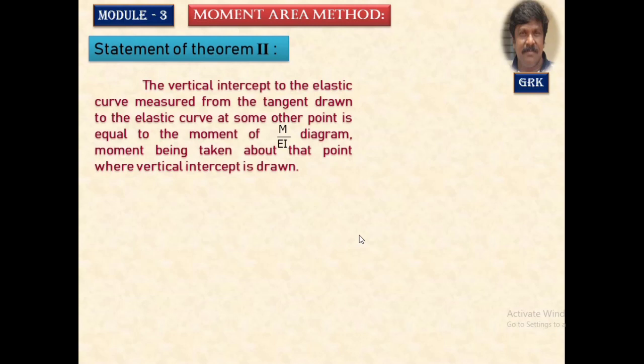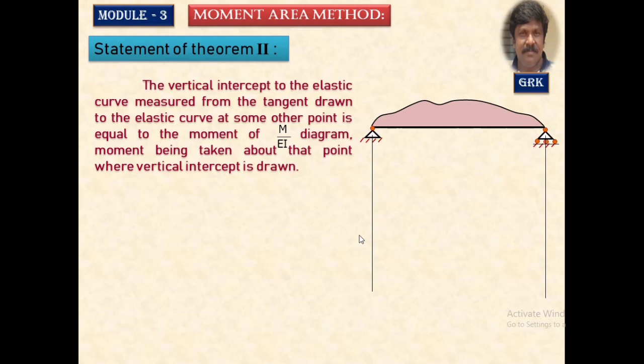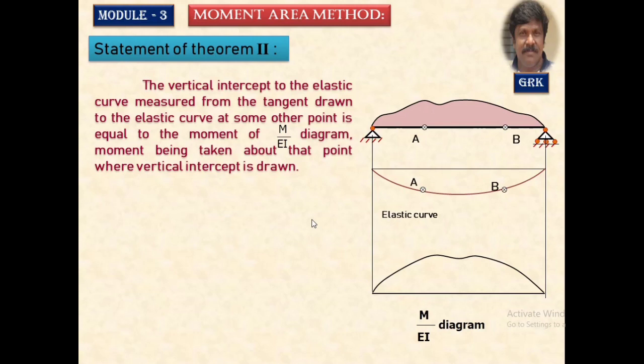Mohr's second theorem is related to the deflection at any point along the length of the member. It states that the vertical intercept of the elastic curve measured from the tangent drawn to the elastic curve at some other point is equal to the moment of the area. In Theorem 1 we considered the area of the M/EI diagram; in Theorem 2 we consider the moment taken about the point where we want to calculate the deflection.